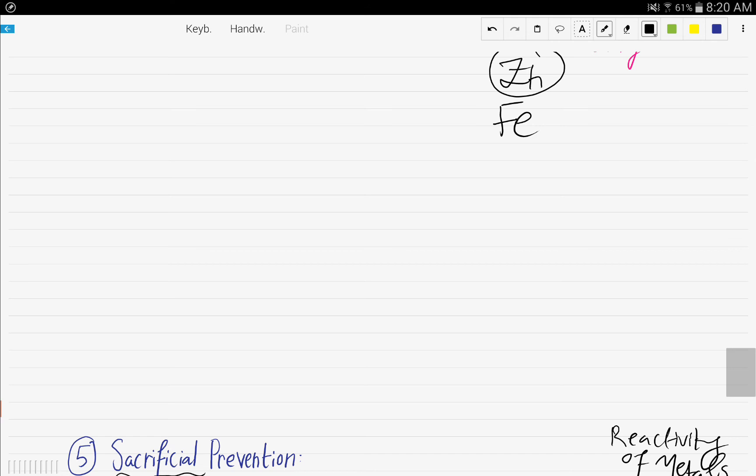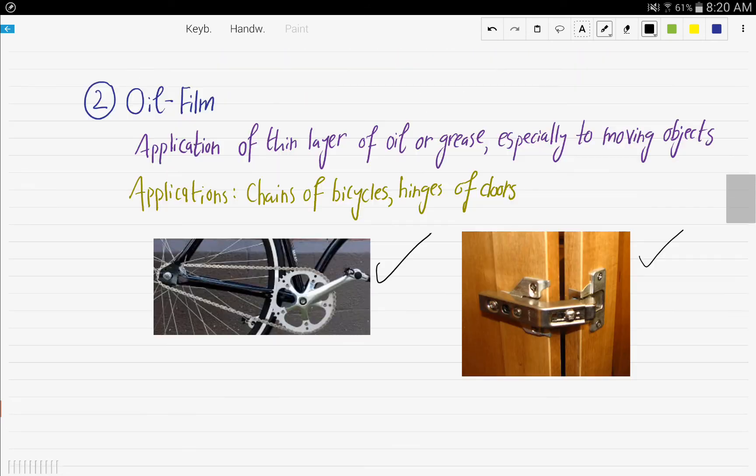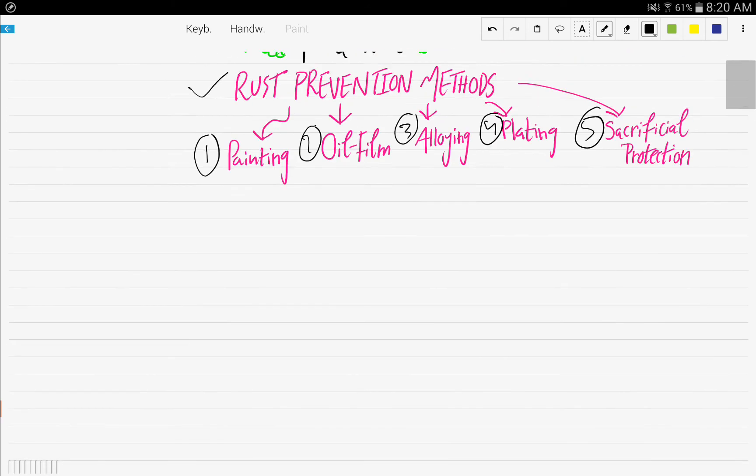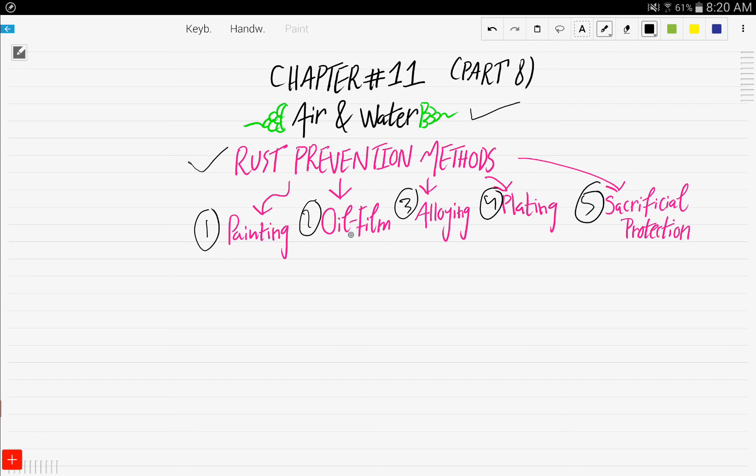I hope these rust prevention methods were easy to understand and grasp. Again, we discussed painting, oil film, alloying, plating, and sacrificial protection. If you have any questions, don't hesitate to leave them in the comment section below. Thank you for watching, and see you in the next video.